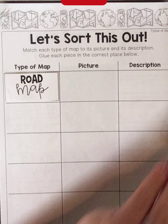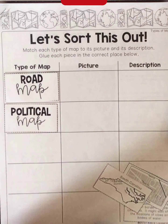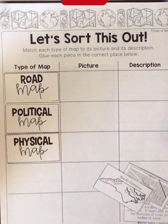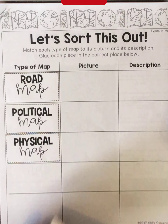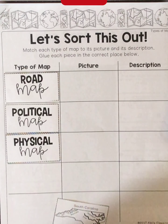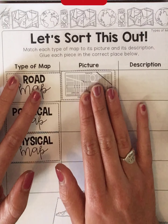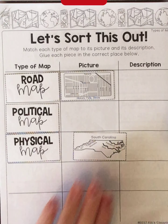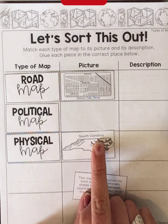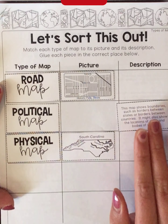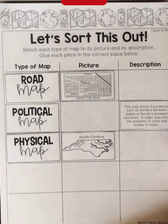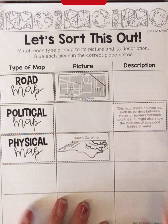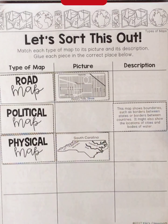I would recommend cutting out all of your different types of maps and laying them out. For example, a road map — this picture looks like this — then find its correct description. For a political map, I don't have the picture here, but I do have the description of the political map, and that description matches what the types-of-map page describes. It says a political map shows boundaries such as borders between states or borders between countries. Continue cutting out and gluing until all your boxes are filled in.